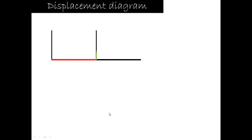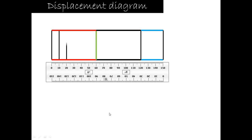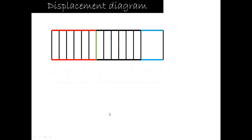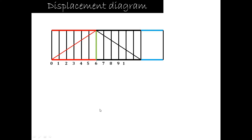Now let us start with the displacement diagram. We draw 6 cm for the out stroke and immediately 6 cm for the return stroke; the remaining portion is the return dwell, which is of no use. We divide the out stroke into 6 equal parts and the return stroke also into 6 equal parts. The lift or height of the follower is 4 cm. Since both out stroke and return stroke occur with uniform velocity, we draw diagonals for each.